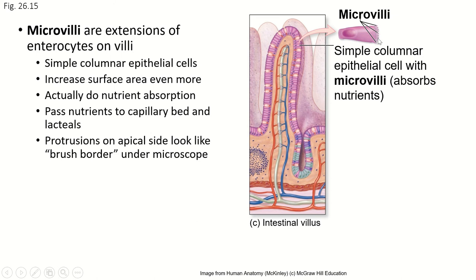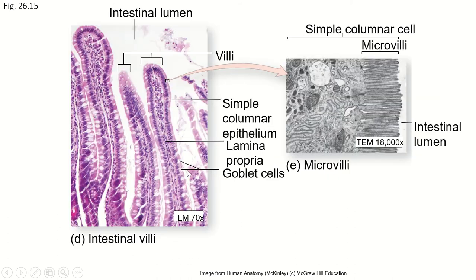All of the microvilli together on these cells give it a fuzzy appearance on a microscope slide, and it's called a brush border because it looks like a little brush. Looking at this on a microscope slide, here's a villus, and you can see this little fuzzy edge — that's the microvilli, that's the brush border together.